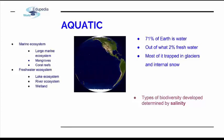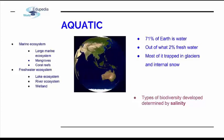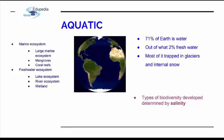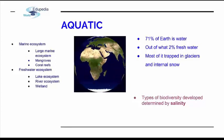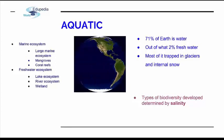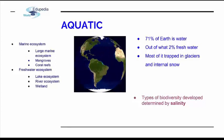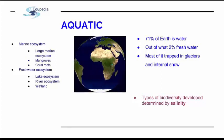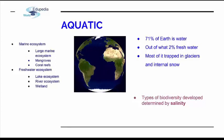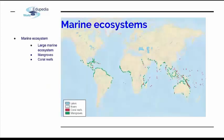Marine ecosystems can include large marine ecosystems or oceans as we know them, seas, mangroves, and corals. And freshwater would include lakes, rivers, and wetlands. We'll talk about each of these in more detail.